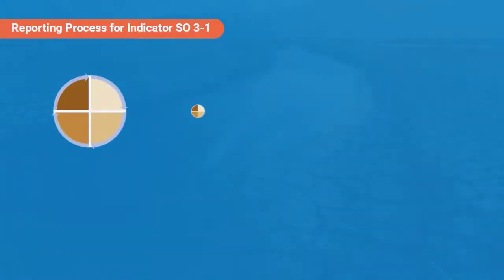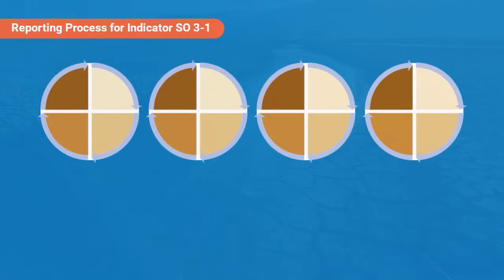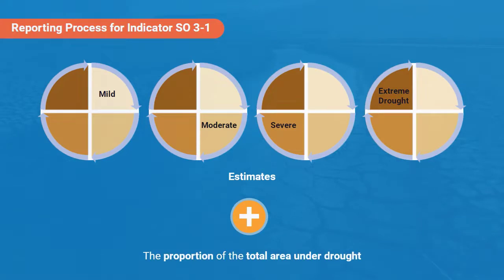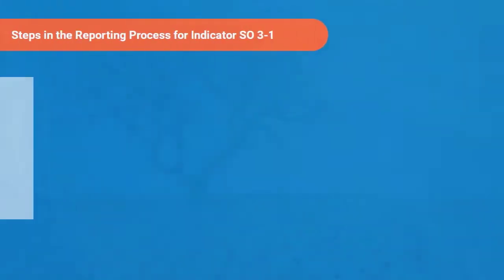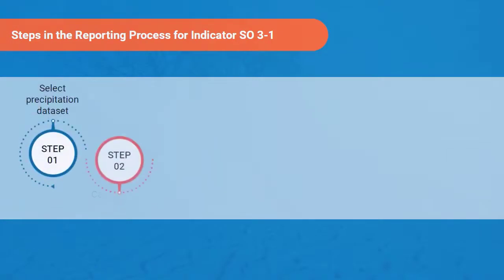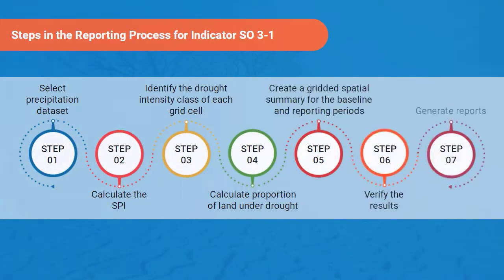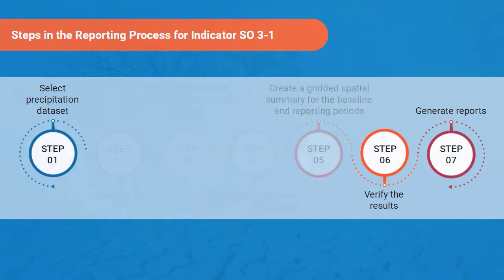The reporting process for indicator SO3.1 consists of estimates of the area under four drought intensity classes as defined by the SPI, and of the proportion of the total area under drought regardless of intensity. The reporting process includes seven steps. If parties decide to use the default data, steps two to five are unnecessary.